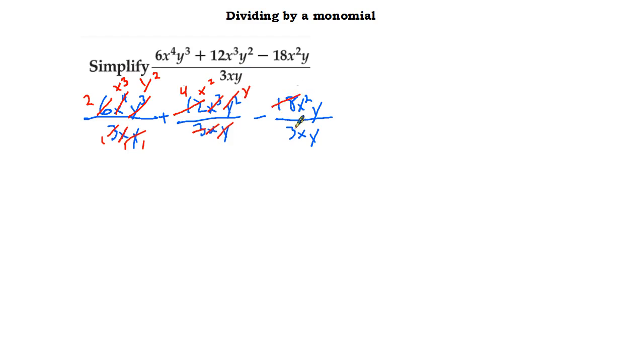And then 18 and 3 gets me 6. X squared and x gets me x. Y and y, that's just 1 and 1. And voila, we're ready to write our answer. It is going to be 2x cubed y squared plus 4x squared y minus 6x.